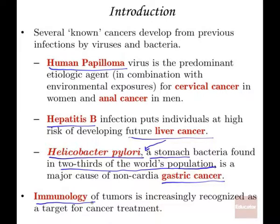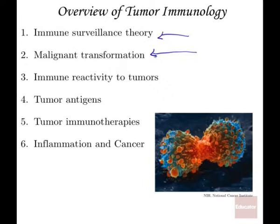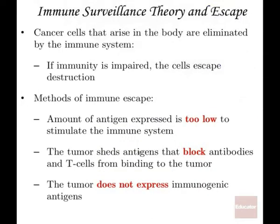The other important aspect of immunology in relationship to tumors is that the immune system can be recruited to actually treat tumors. Today we're going to focus on the theory of immune surveillance — how the immune system identifies tumors, what transformations occur in tumors, how the immune system reacts, what aspects of tumors promote an immune response, what therapies utilize the immune system, and how inflammation is related to the development of cancer.